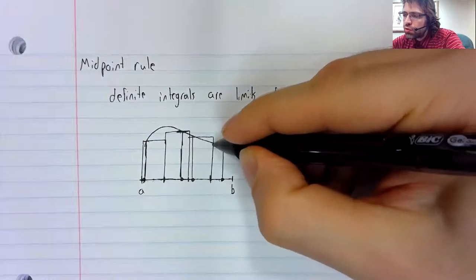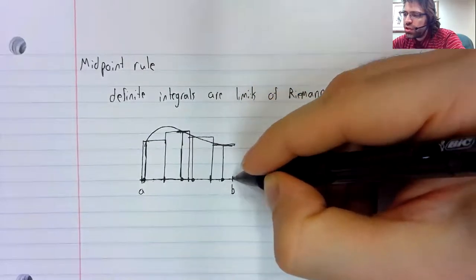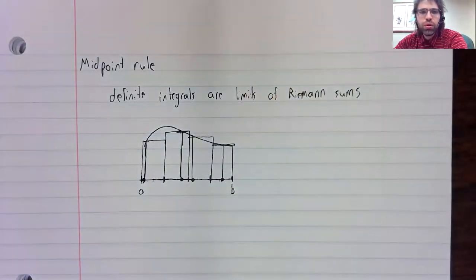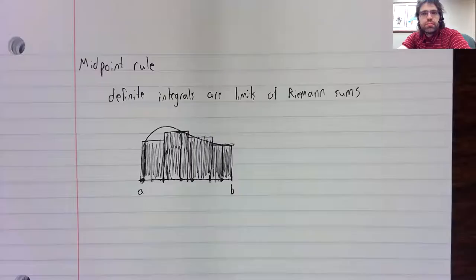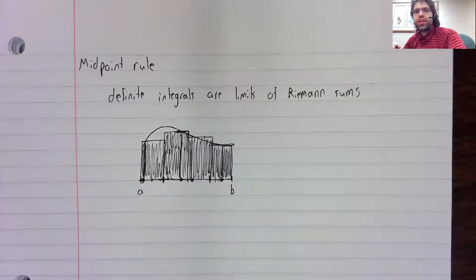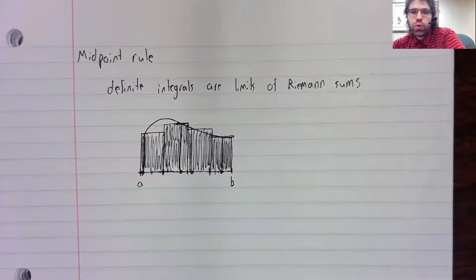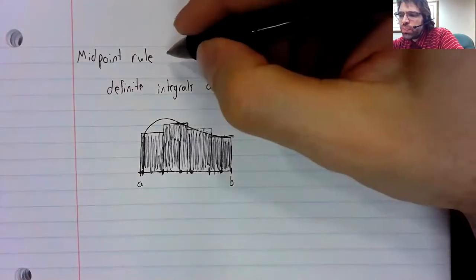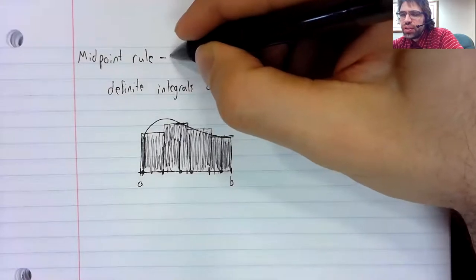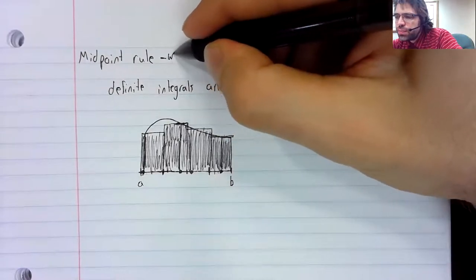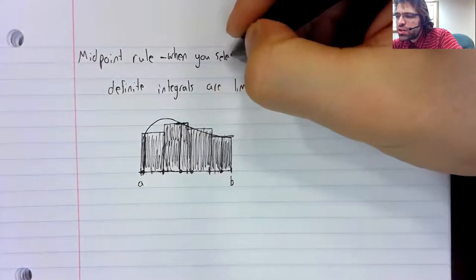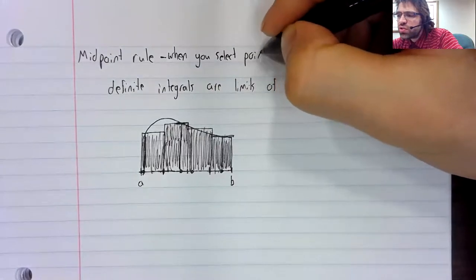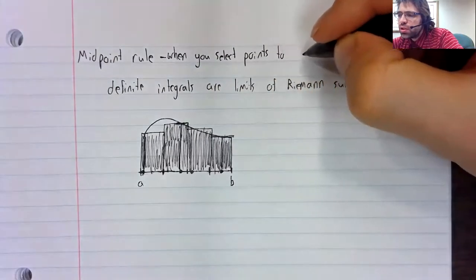You repeat that process for each of these subintervals. You add the areas of the rectangles together. And there's the approximation of the definite integral.